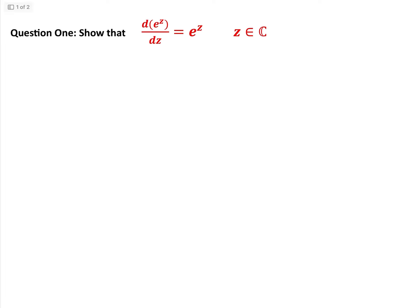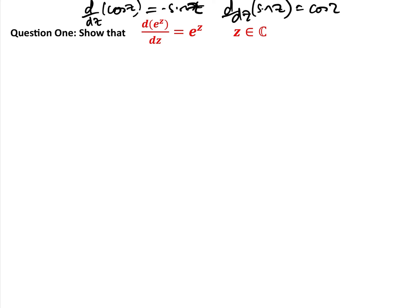Question one: in the previous video we proved that d/dz(cos z) = -sin z and d/dz(sin z) = cos z, so have a look at that video if you want. This question is very similar — show that d/dz(e^z) = e^z. We know that's true for reals, and what we're going to do is show that it's true for complex numbers.